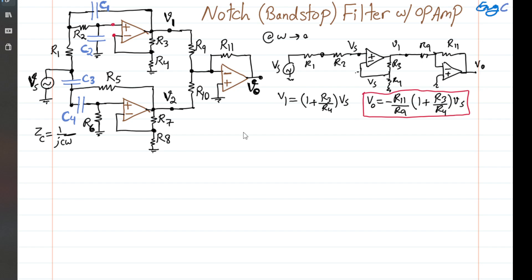At super high frequency, when ω approaches infinity, the impedance of a cap, 1/jCω, goes to zero — all capacitors are approximately shorted. When C2 is shorted, the positive terminal of the top op-amp is connected to AC ground, and the negative terminal is also AC grounded. Since this point is AC grounded, the AC voltage drop across R4 is zero, meaning no AC current flows through R4, and therefore no AC current through R3 either. So V1 has to be zero at super high frequency.